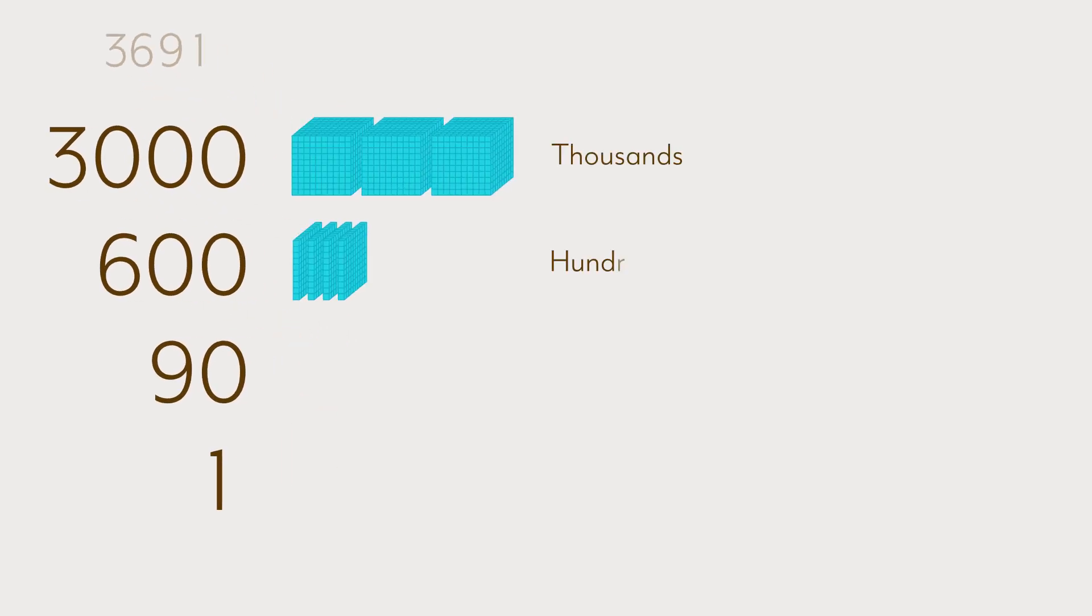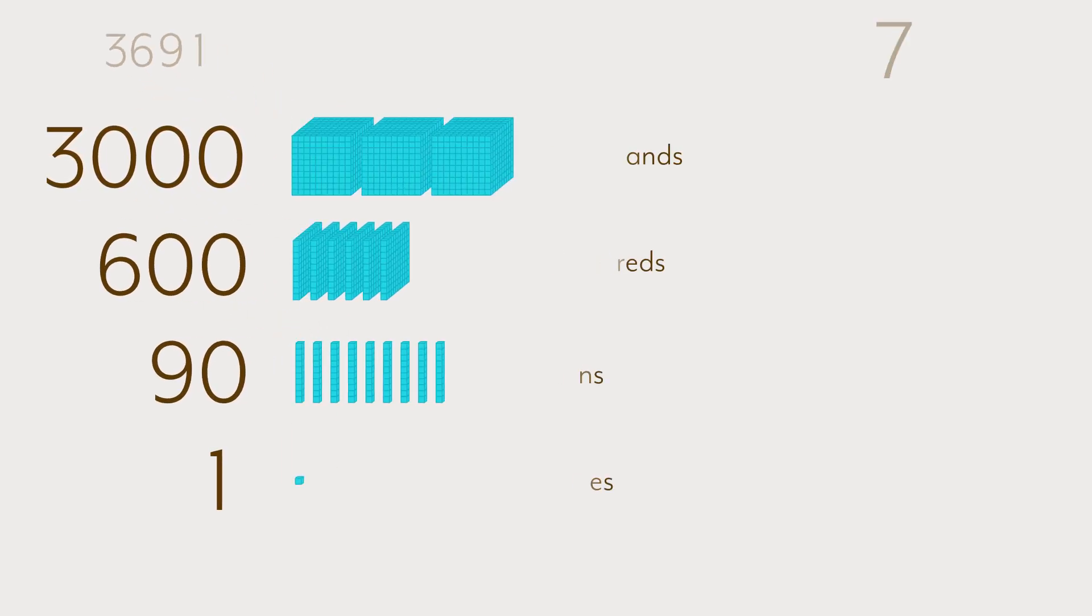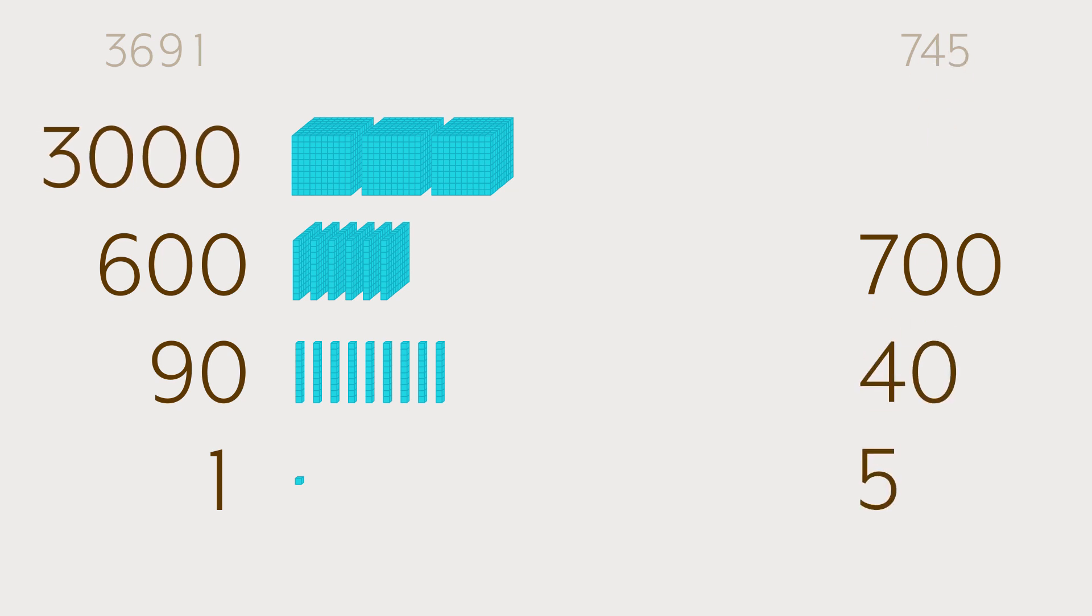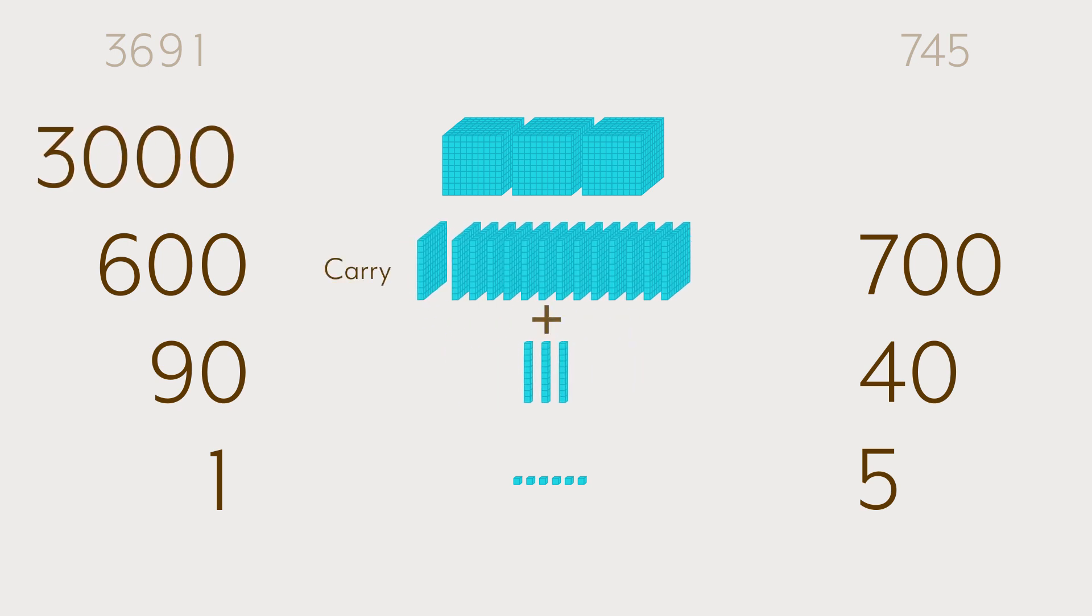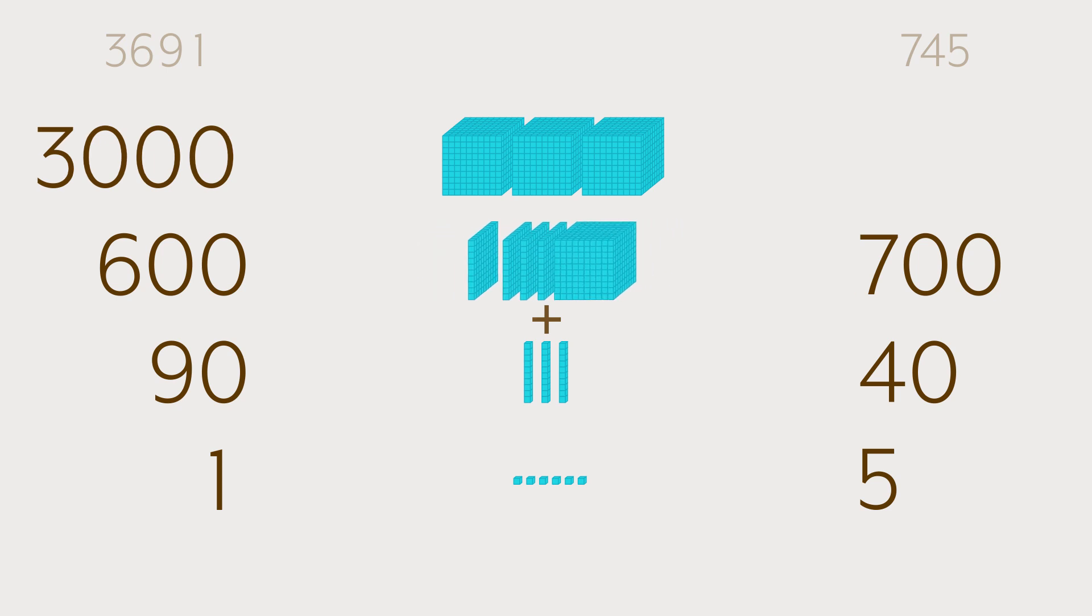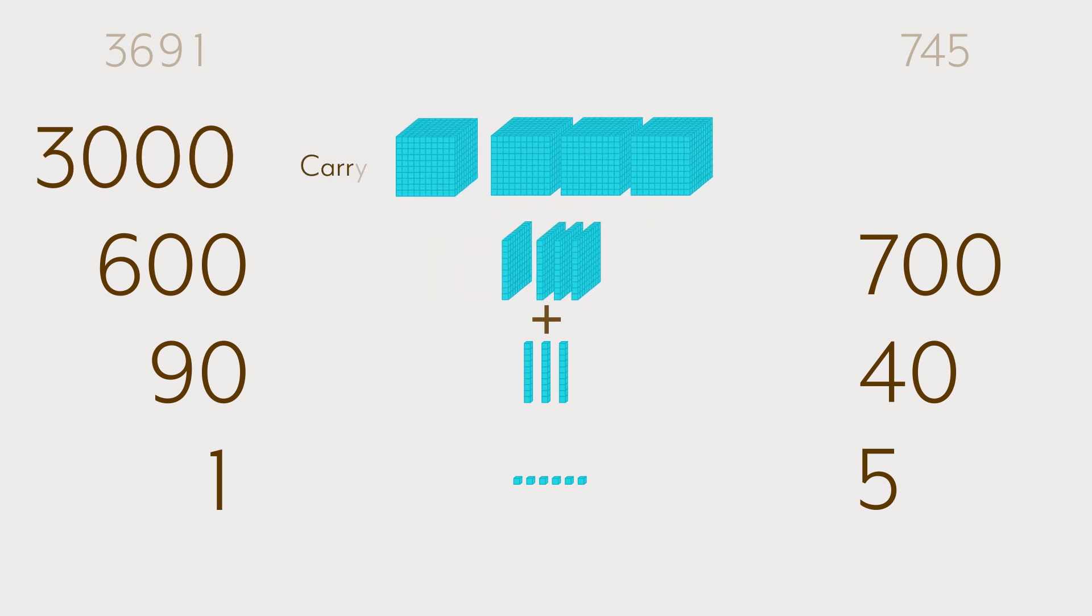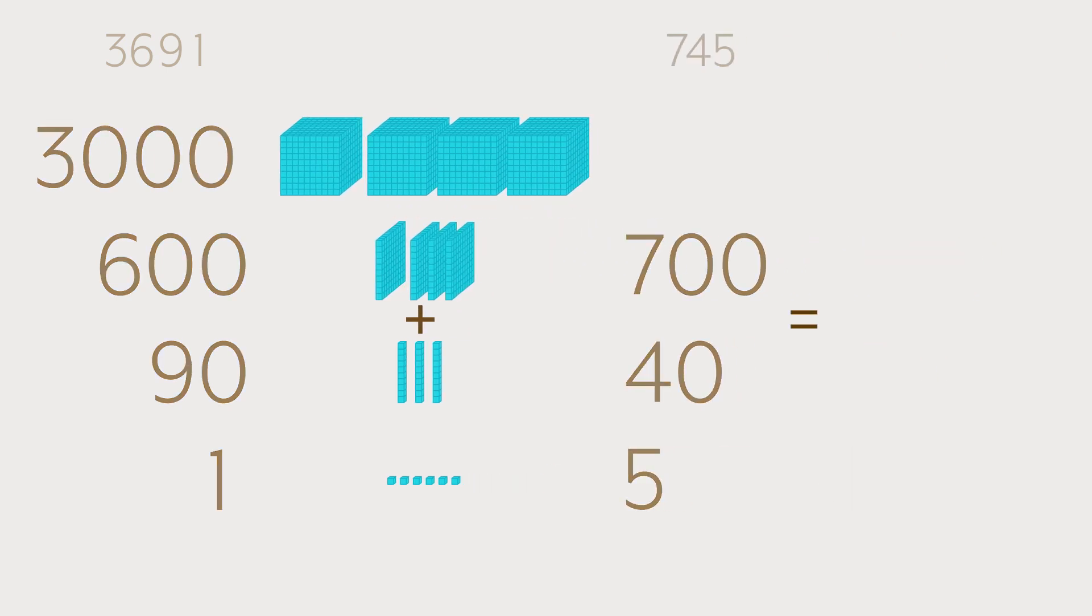But why does it work? Well take the number 3691. If you also do that with 745 what you notice is that we're really adding like things together. When you add 10 ten blocks together you get a hundred block which looks like this and when you add 100 blocks together you get a thousand block that looks like this. All we're doing is we're keeping track of what kind of blocks we have and what kind of new blocks we're making by putting together other smaller blocks.